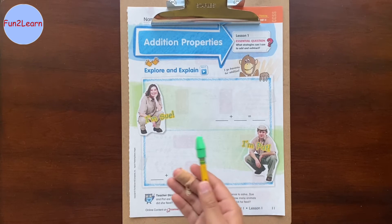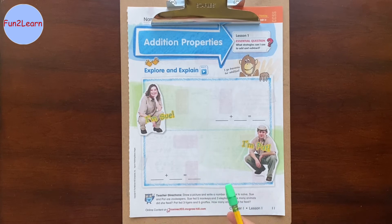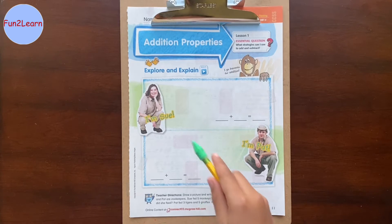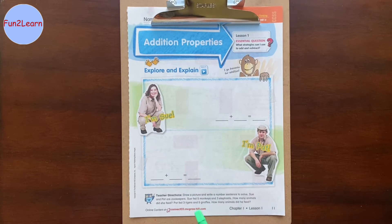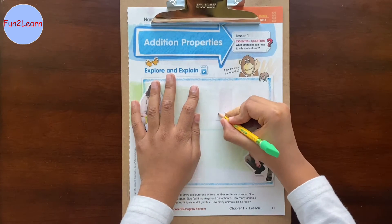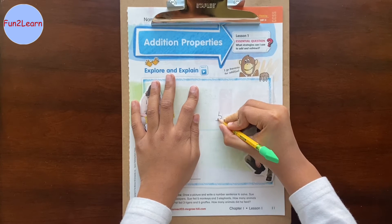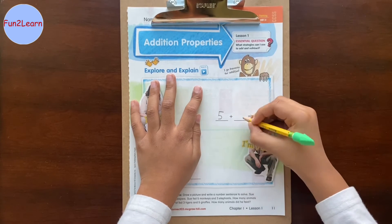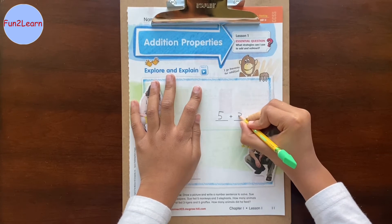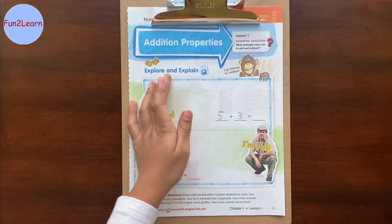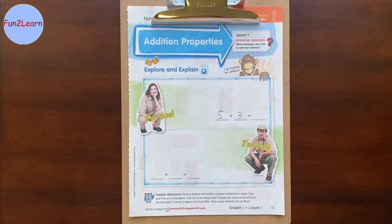You can draw whatever picture you want in these blanks, but I'll go ahead and write the number sentence. So, this is Sue. She fed 5 monkeys and 3 elephants, so that is 5 plus 3. 5 plus 3 is 8, so the answer is 8.